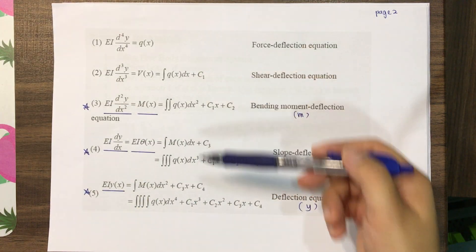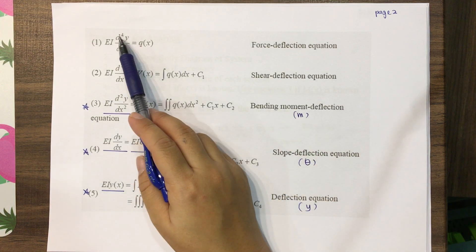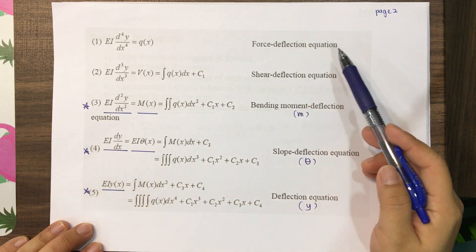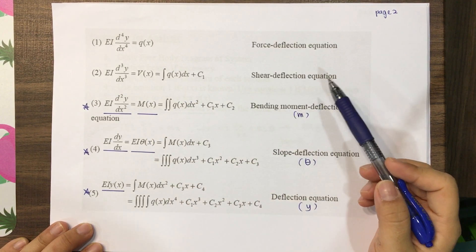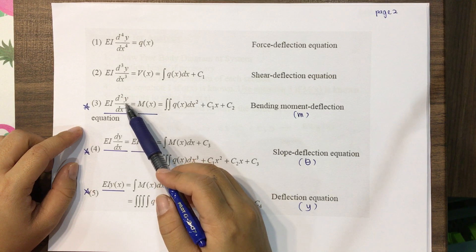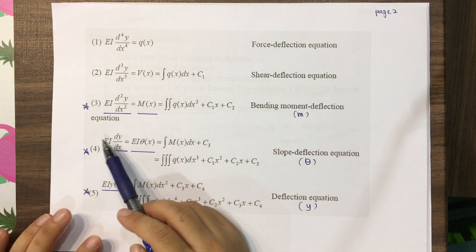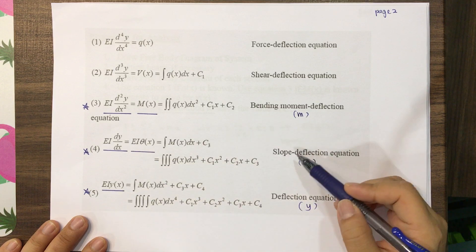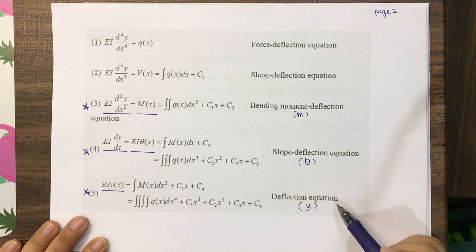These five equations listed here are the important equations that you will use during this chapter. Number one: EI d⁴y/dx⁴ — this is the force-deflection equation. EI d³y/dx³ is the shear-deflection equation. EI d²y/dx² is the bending moment-deflection equation. EI dy/dx, also written as EI theta, is the slope-deflection equation. And EI y is the deflection equation.